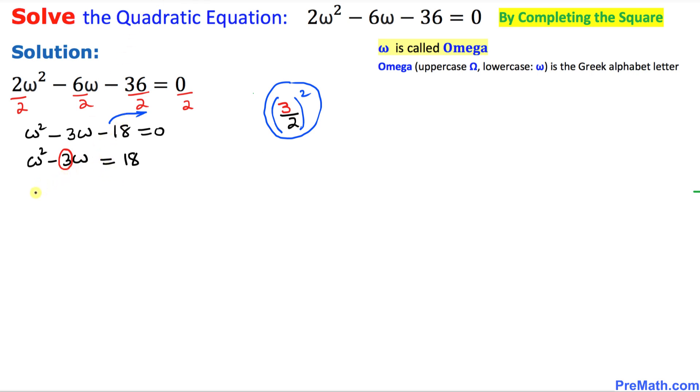So let me write down ω² - 3ω plus, and here 18 plus. I'm going to put down (3/2)² on this side and (3/2)² on this side as well.